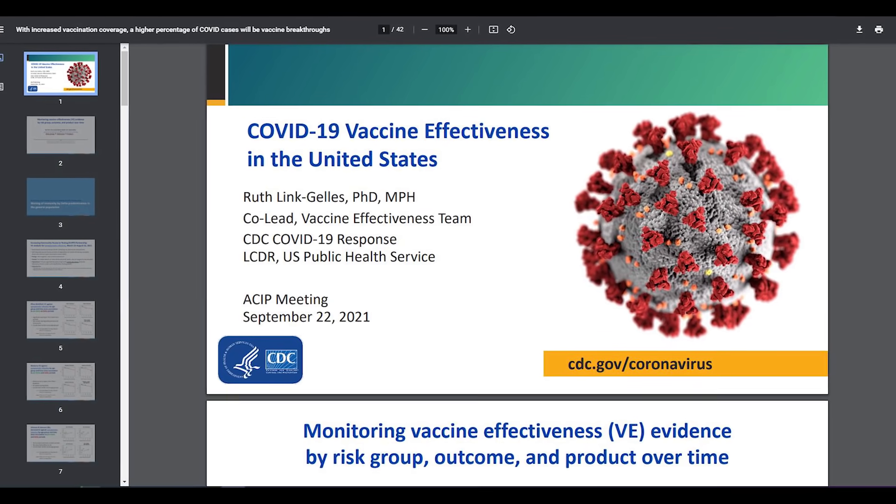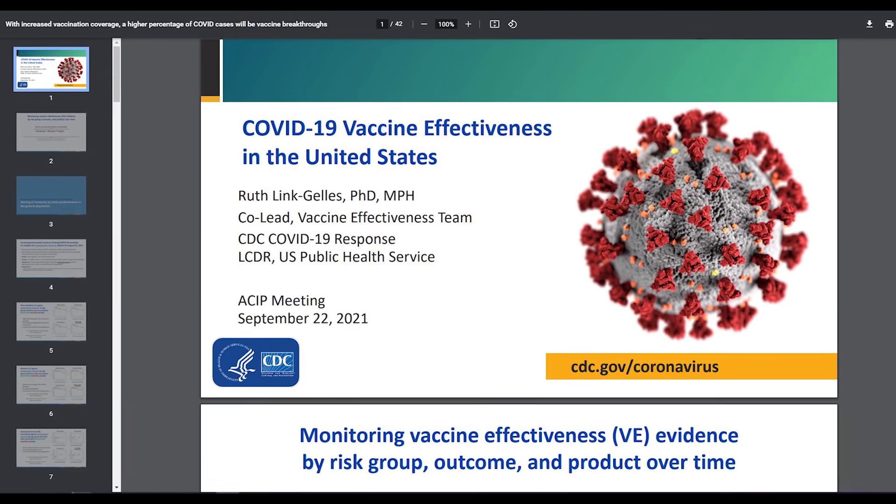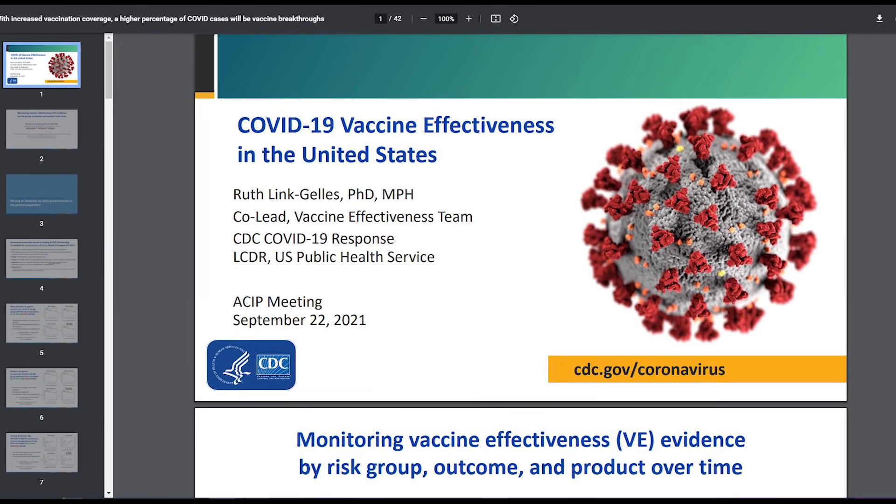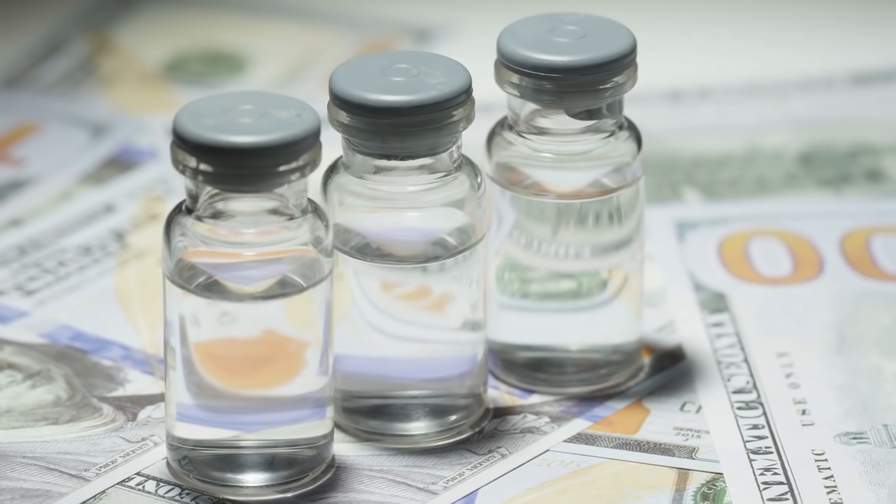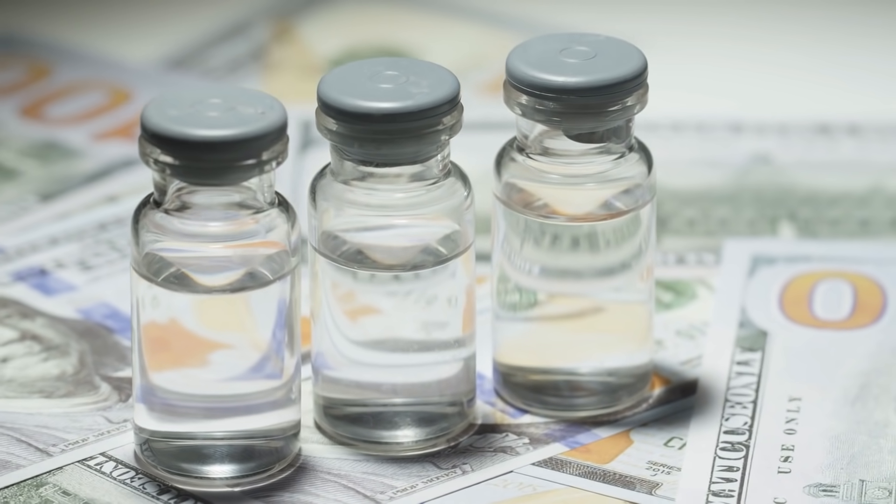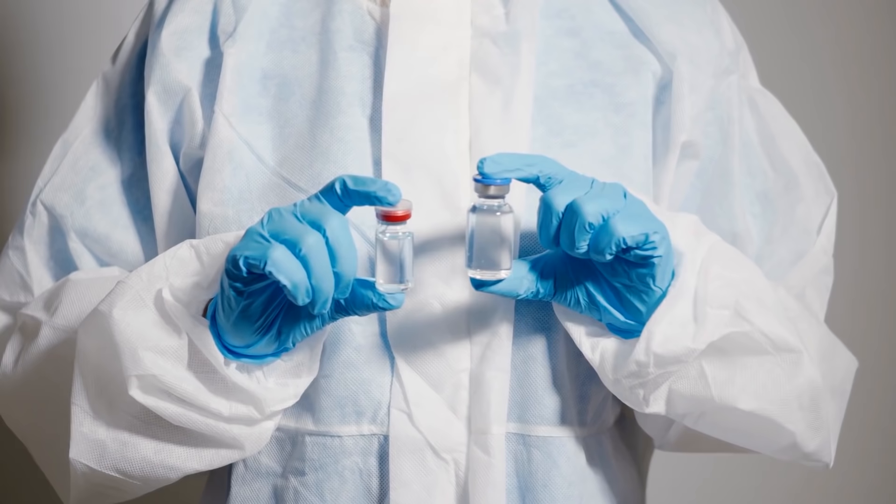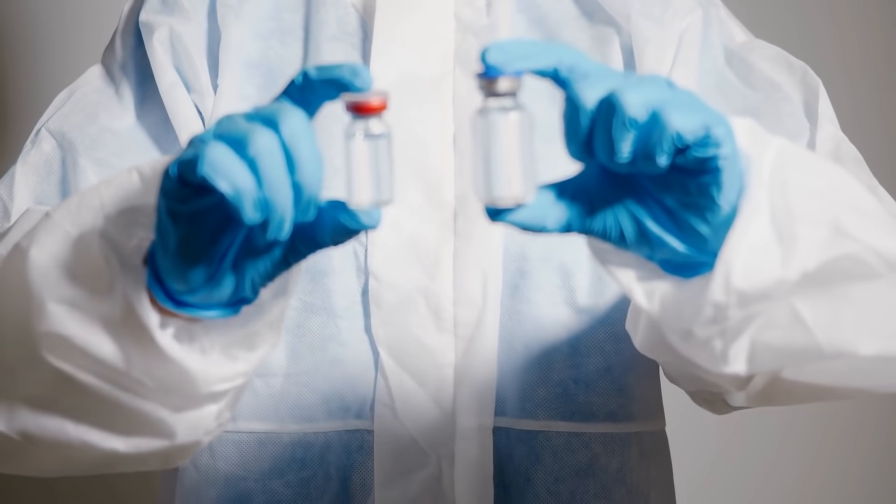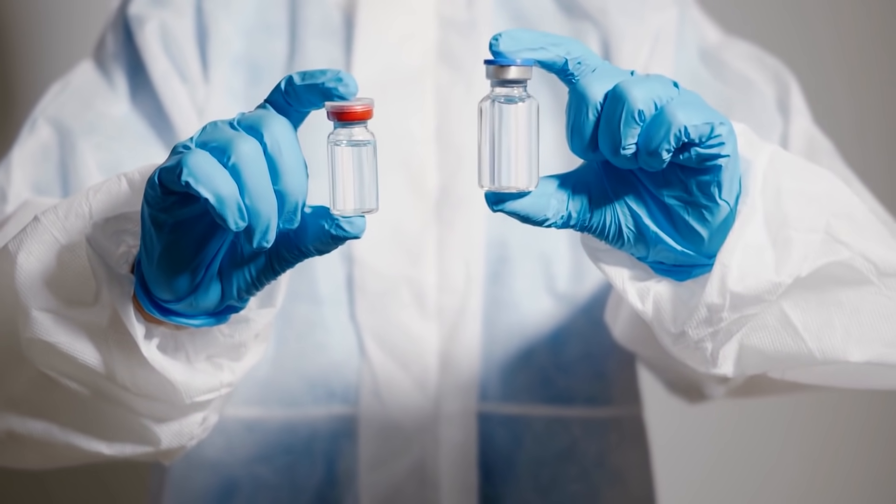In the ACIP meeting on September 22, the CDC reported its findings of vaccine effectiveness in the US. All three vaccines with emergency use authorization were included. Each performed well in their own right in preventing hospitalization and severe disease.